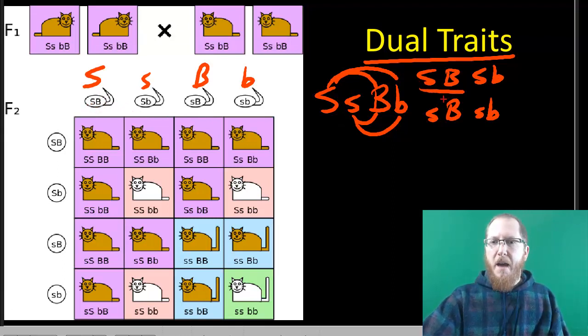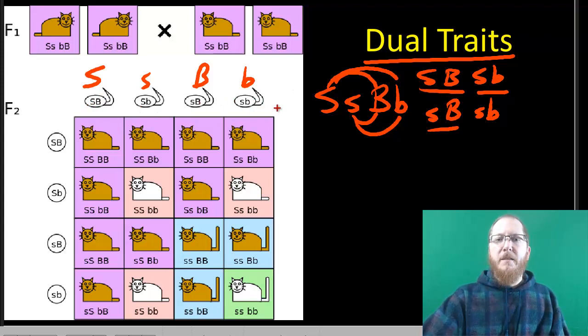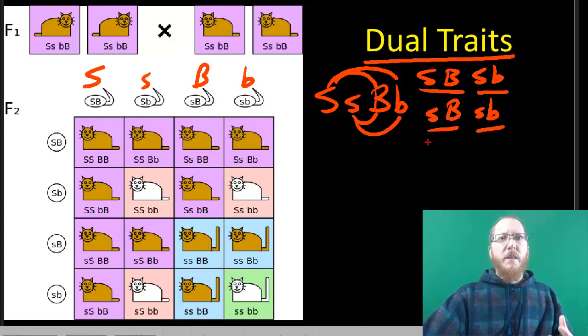If you look up at the top here, you can see the potential sperm is what we're using as an example. It can be big S, big B. We have that. It can be big S, little b. We have that. Little s, big B. There we go. And then little s, little b.